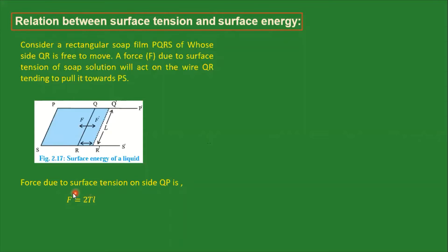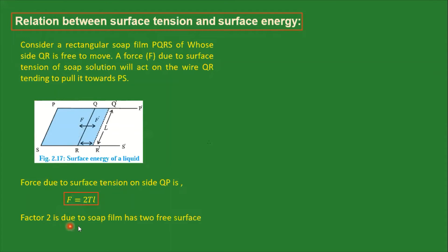The force due to surface tension is given by the formula F = 2Tl. We use the formula for surface tension T = F/l, so F = Tl. But here we use 2Tl because this soap film has two free surfaces — both surfaces are in contact with air. So the factor of 2 comes because the soap film has two free surfaces.